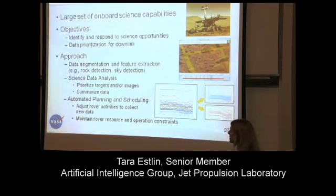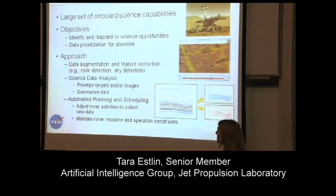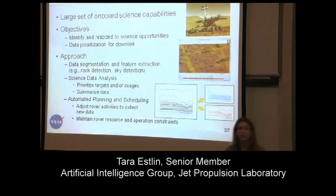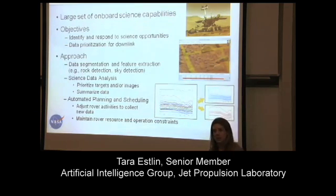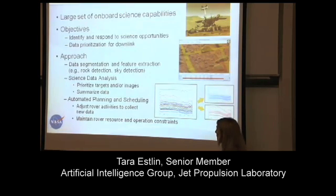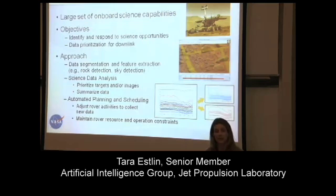Most of the modules of our system fall into one of three categories. There's the data segmentation category, which segments out the interesting parts of data. For Aegis, I was segmenting out the rocks, but there are lots of different things you can pull out. For instance, we have a cloud detector, so one of the things we want to segment out is the sky from the ground.